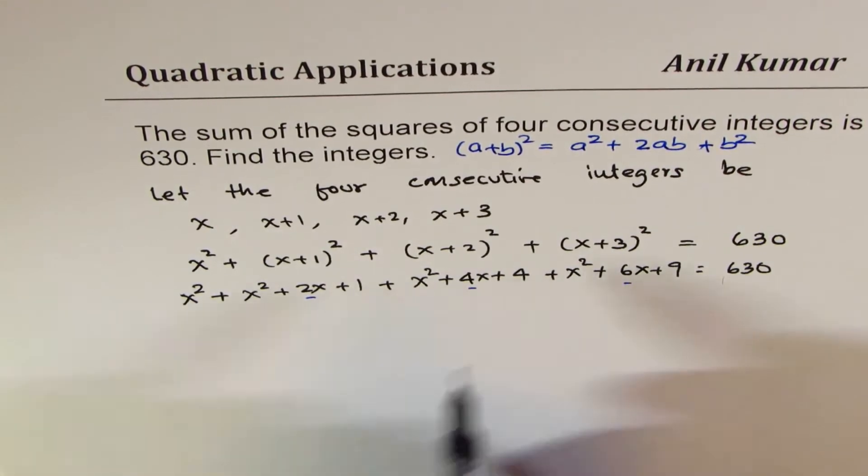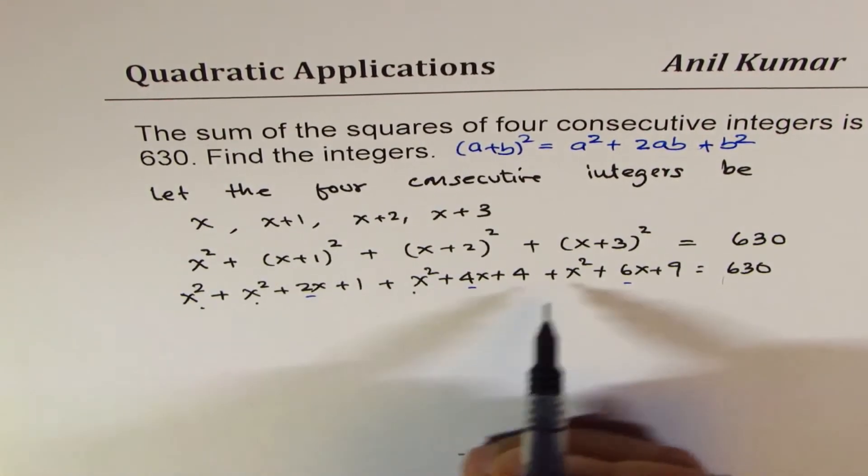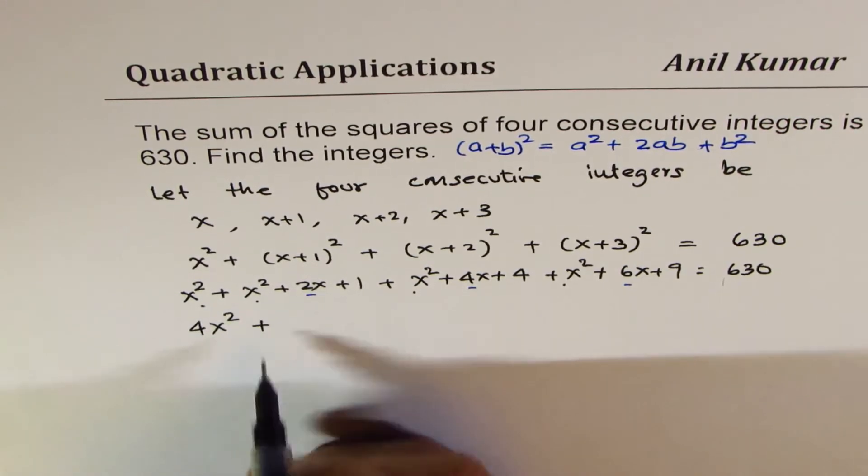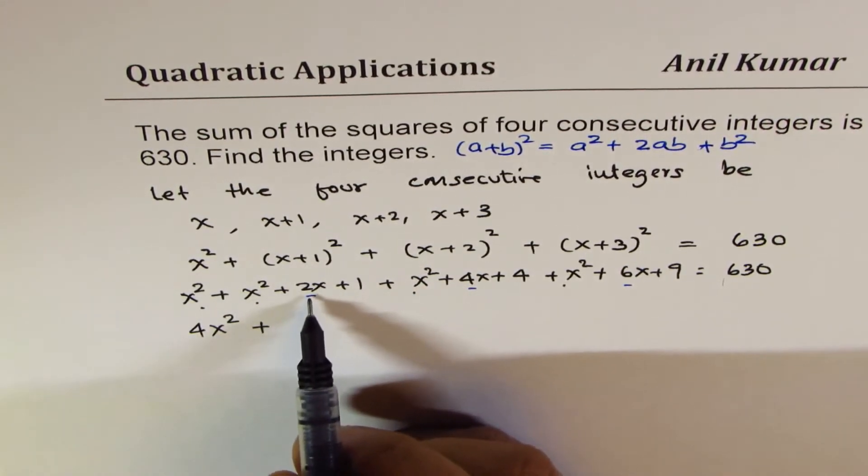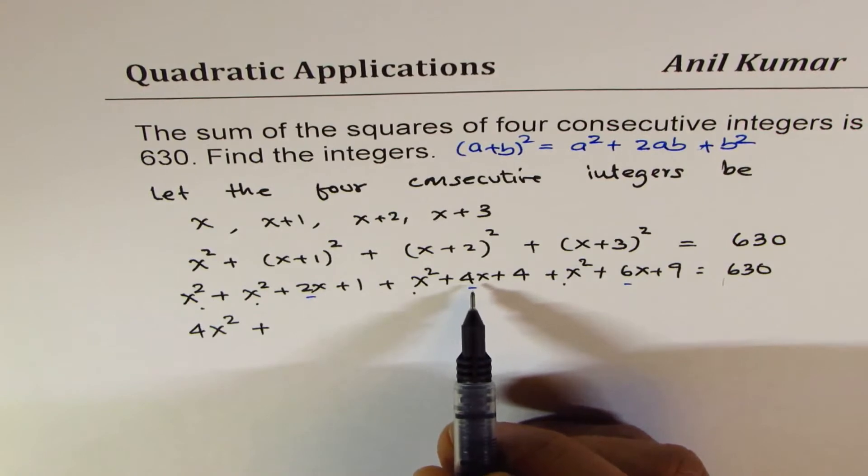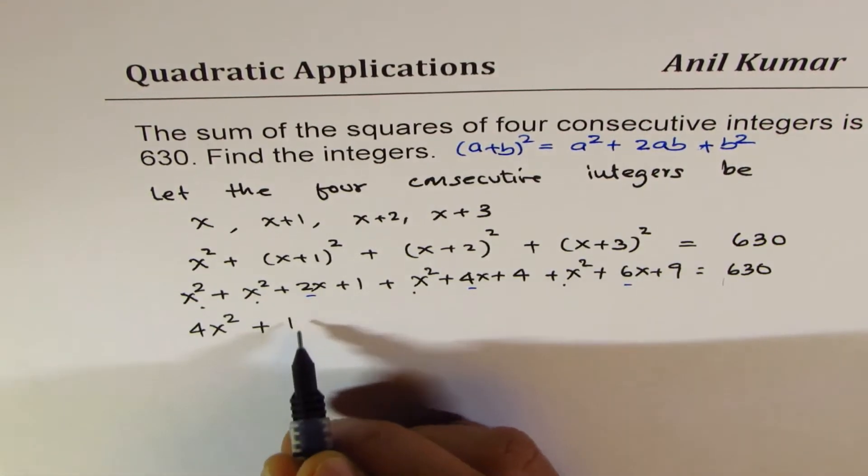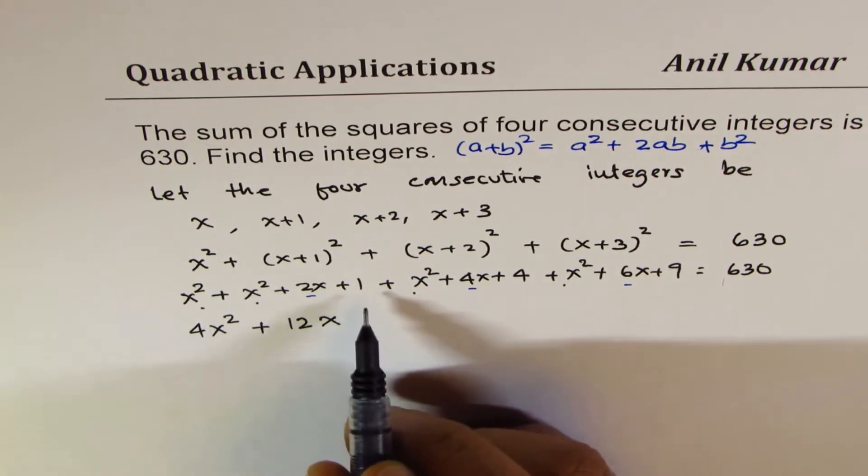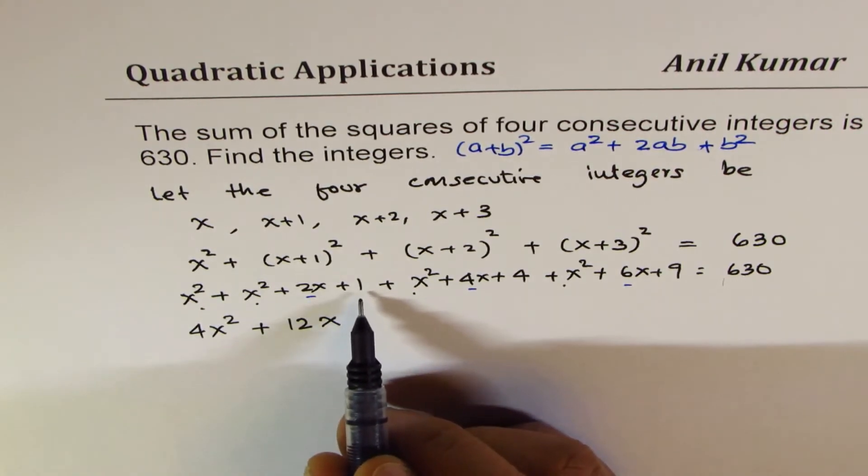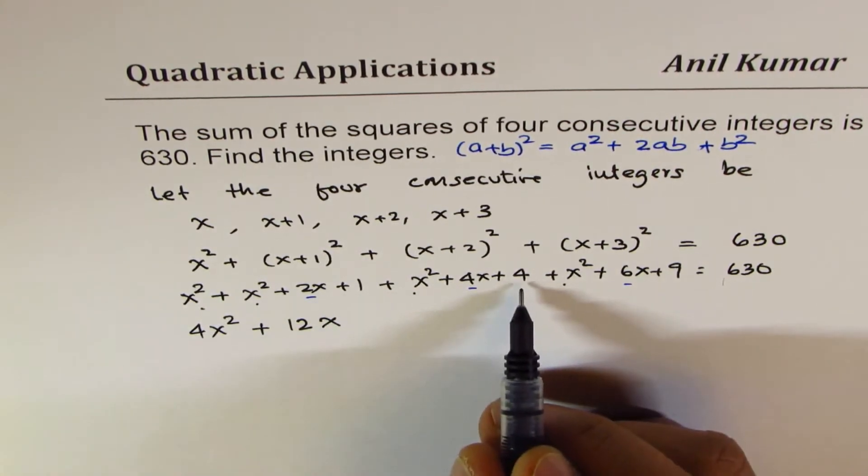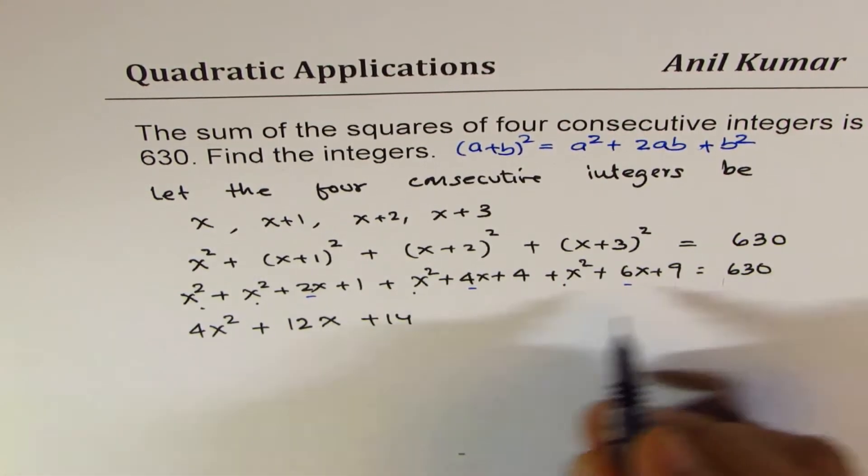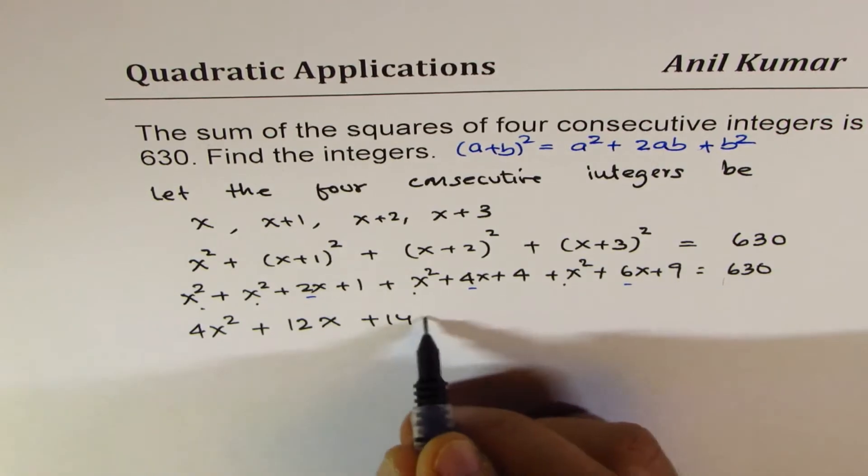Now let's combine the like terms. 1, 2, 3, 4 x squares are there. So let's write 4x squares plus the x terms are 2 and 4, 6. 6 plus 6 is 12. So we have 12x. Constants are 1 plus 4, 5, 5 plus 9, 14. So plus 14 and we have 630.